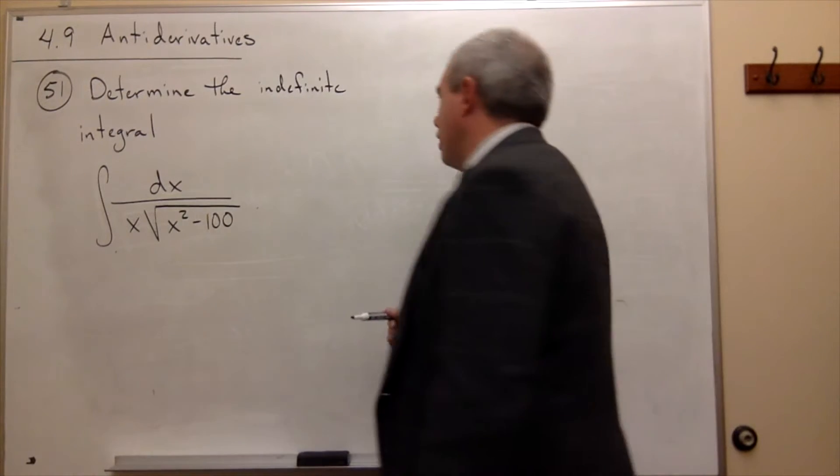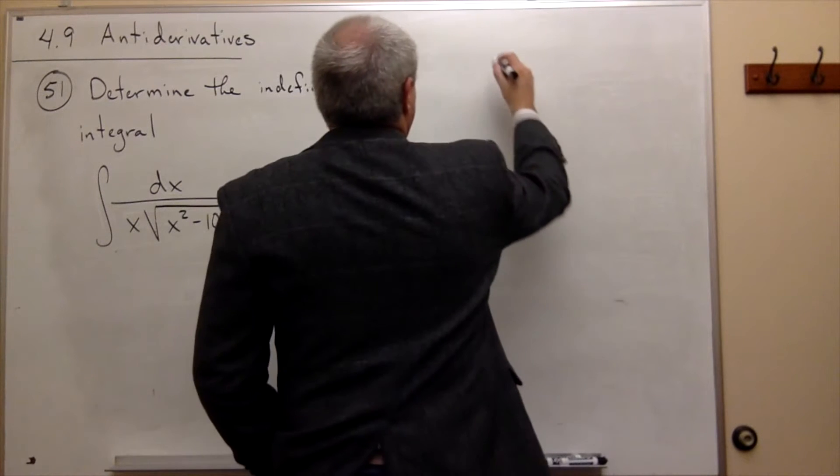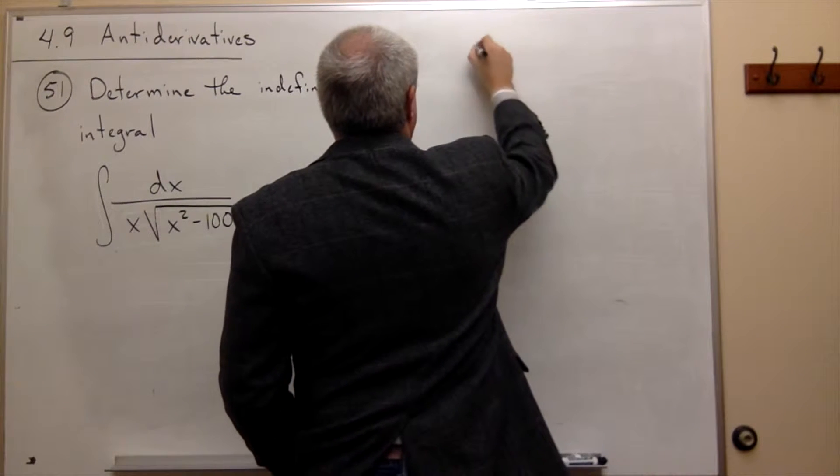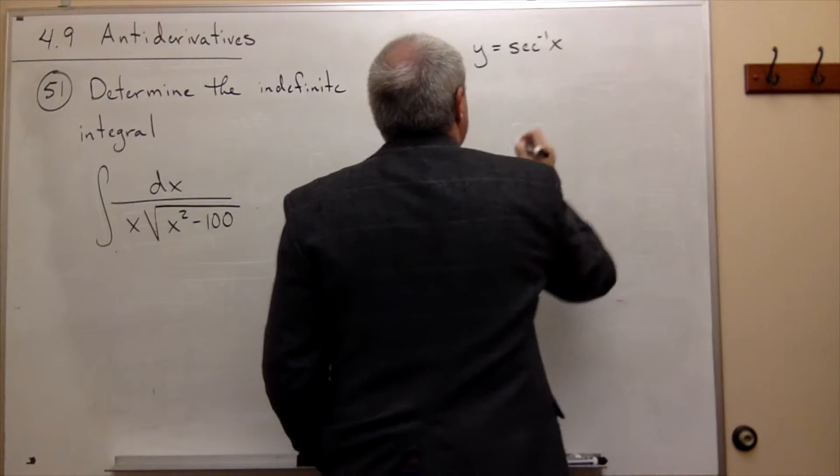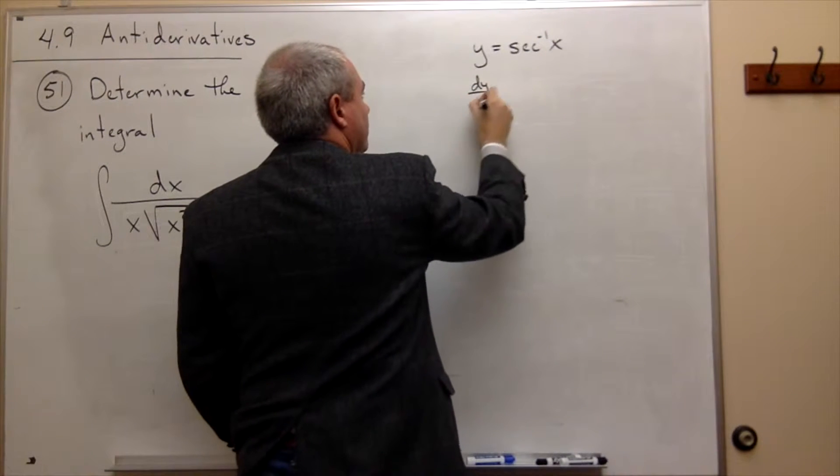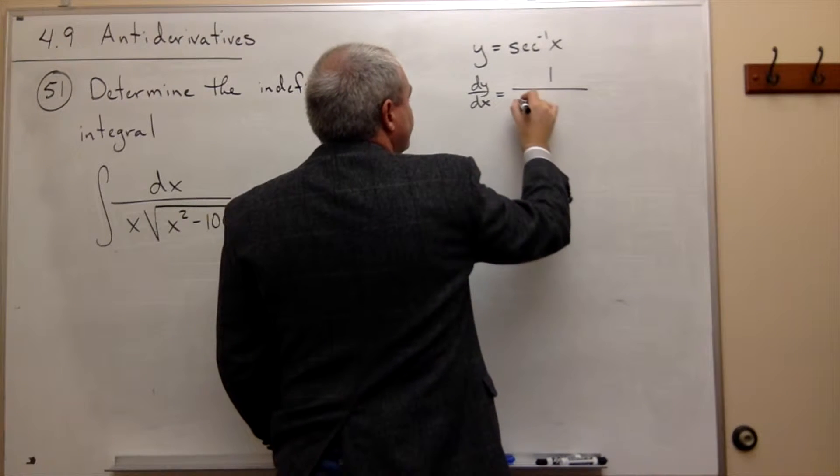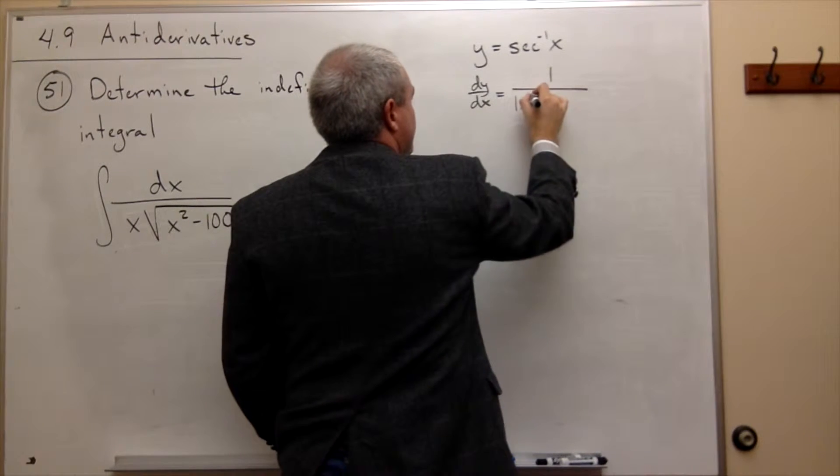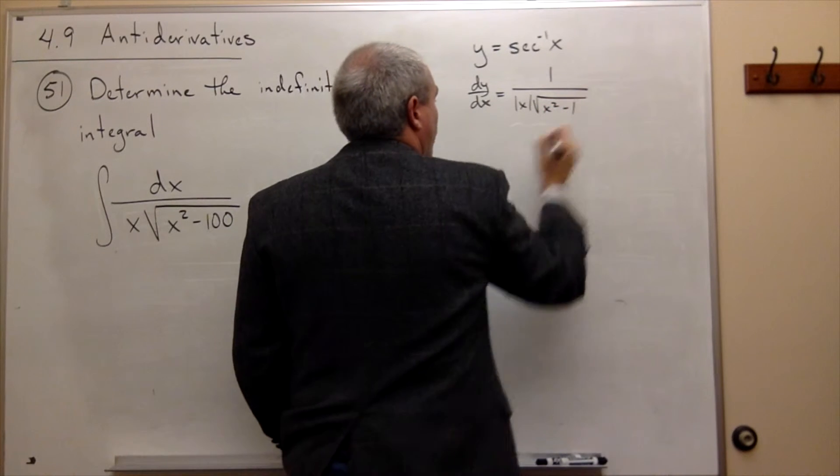So, what I want to do is look at if y equals secant inverse of x, then what's the derivative? Well, I know it. It's 1 over |x| times the square root of x squared minus 1.